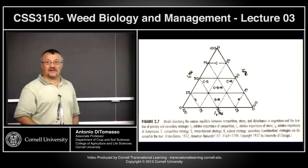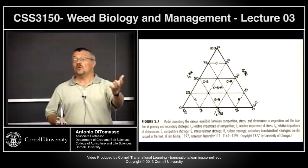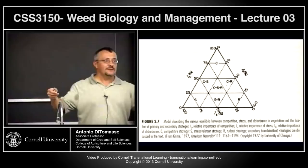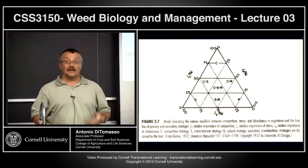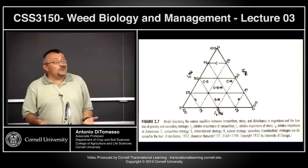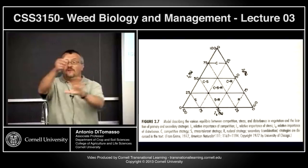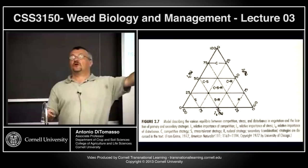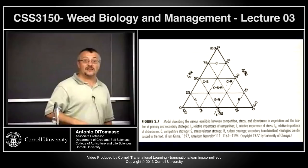Grime also identified ruderal strategists (R) — plants that basically favor disturbance. The more disturbance in a habitat, the more these plants move in. Annual weeds are the classic ruderal strategists — we're tilling the land, chisel plowing, harrowing, disturbing the soil, and boom, these plants are there. He said it's not just one or the other; some species might be a combination, just like soils have various combinations of sand, silt, and clay. He came up with an idealized triangular diagram resembling the soil texture triangle.